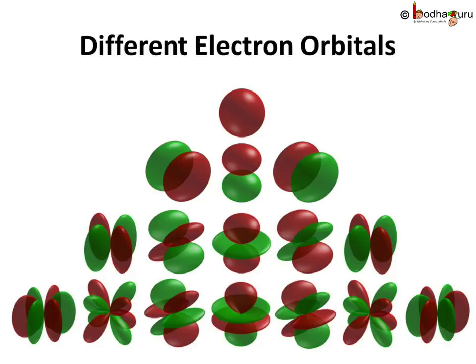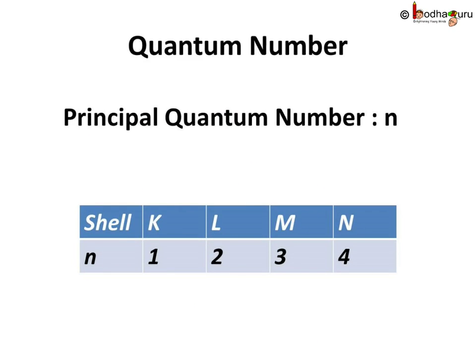Now that we have moved on to the quantum mechanical model of an atom from Bohr's model, how does the electron configuration change? Let us see. Each orbital with stable energy state for the electron is described by a set of quantum numbers. Let us see the first one.